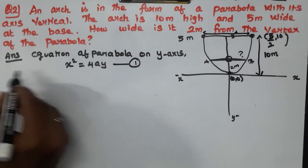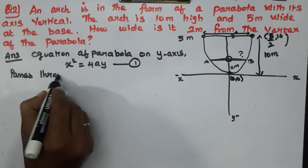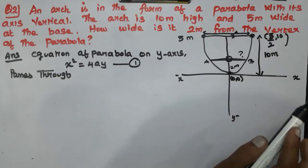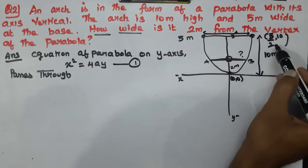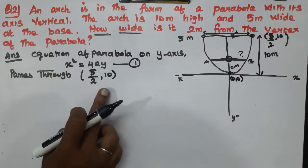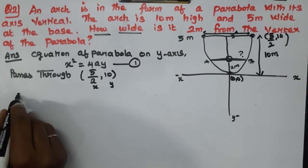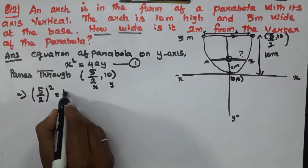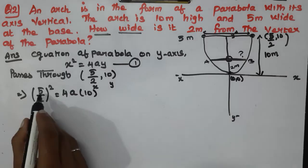This equation passes through the point (5/2, 10). In the diagram, the equation passes through the point (5/2, 10). Let's substitute this point.